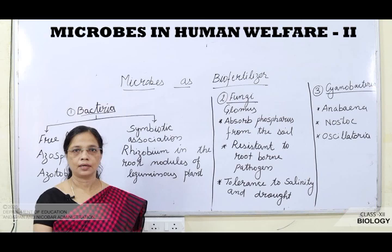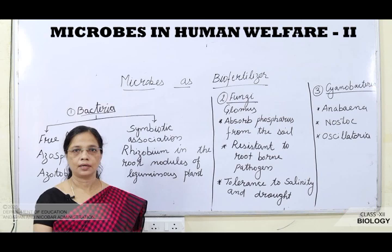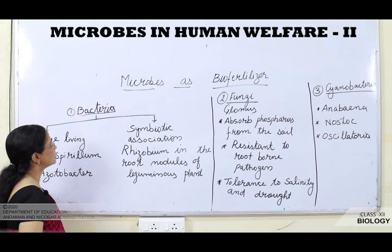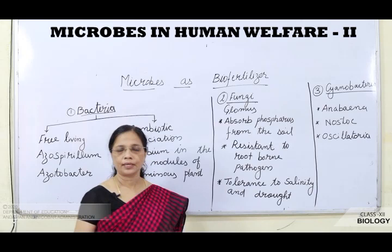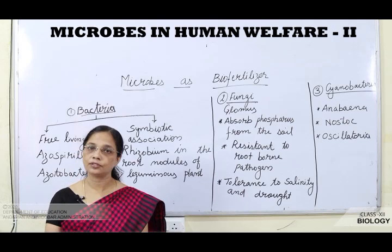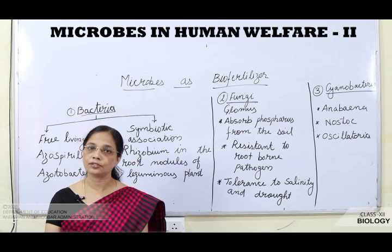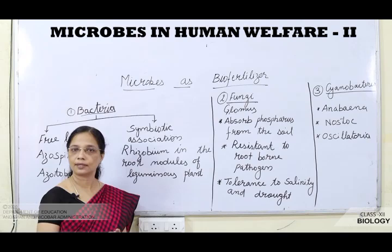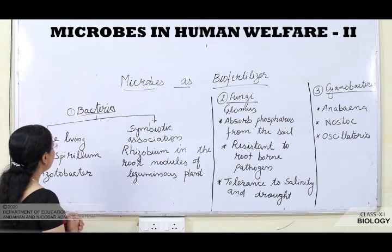To overcome the disadvantages of chemical fertilizers, bio-fertilizers are used. Bio-fertilizers use living organisms — bacteria, fungi, and cyanobacteria — to enrich the soil. Plants require a large amount of nitrogen, which is present in the atmosphere but cannot be absorbed directly by plants — this atmospheric nitrogen must be fixed. Bacteria and cyanobacteria fix atmospheric nitrogen and provide it to plants.